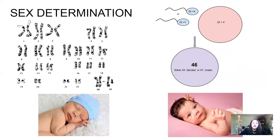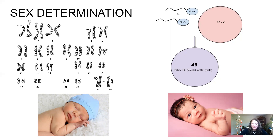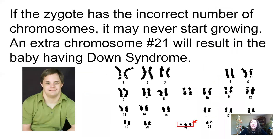Sex determination is a reminder that when sperm and egg fuse, they each bring one sex chromosome. The mother always donates an X chromosome; the father has an X or Y to donate, so it's really the sperm that determines the gender of the baby. There are also trisomy events where through a non-disjunction event in meiosis, you get three copies of one chromosome instead of two. One of the most common is trisomy 21, known as Down syndrome.